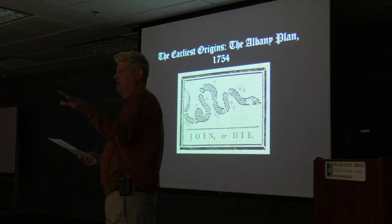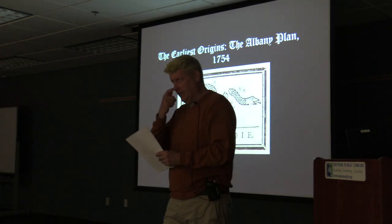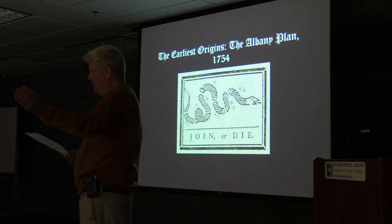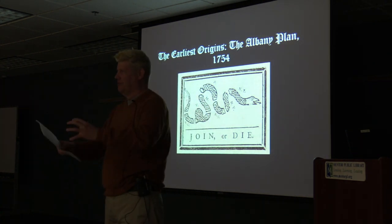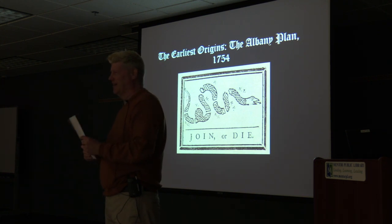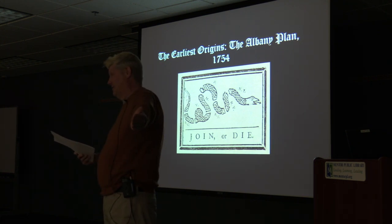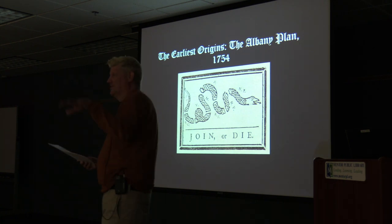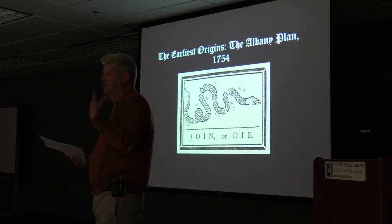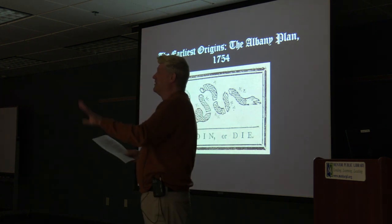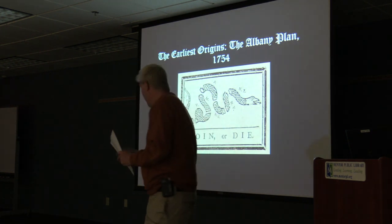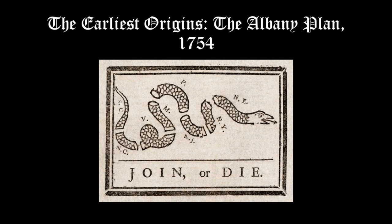They sent the plan around to the colonial assemblies and to the British Board of Trade in London, which was largely running what was going on in the colonies — and it was pretty roundly rejected. Part of the reason was that people were still working on the theory that each colony is its own individual thing. Even by the time of the Civil War, Robert E. Lee still referred to Virginia as his 'country,' even though it was a state. There's a political cartoon from 1754 — probably produced by Franklin or at his behest — that later gets used in the 1760s and 1770s.